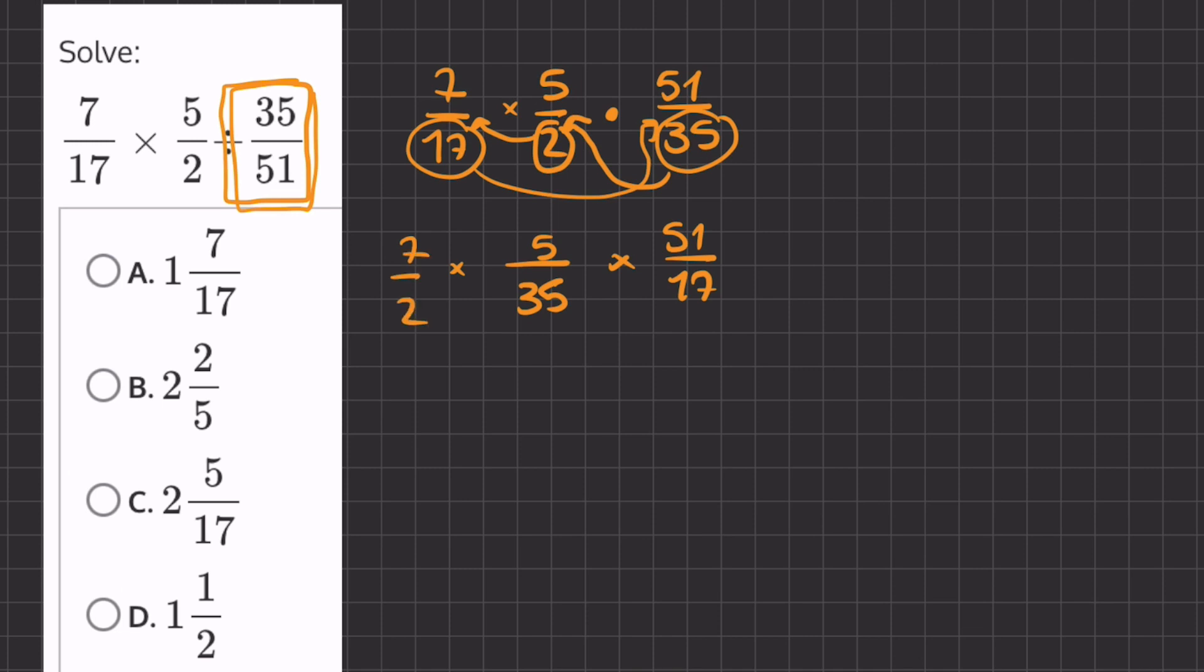Now, let's simplify our fractions a little bit. We can simplify this 5 over 35. Let's first of all rewrite this. We have 7 over 2. And if we simplify this 5 over 35, we will get 1 over 7.